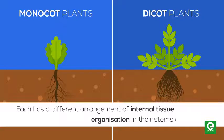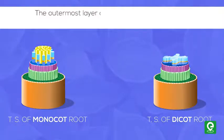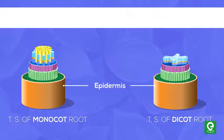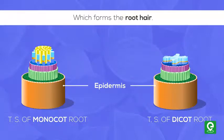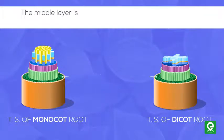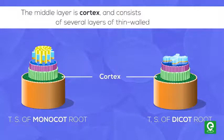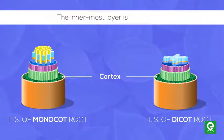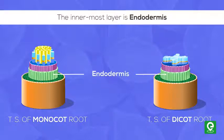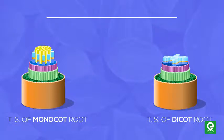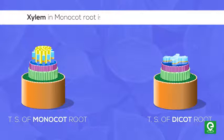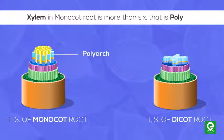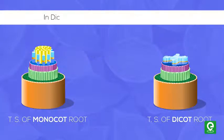The outermost layer of roots in both monocot and dicot plants is the epidermis, which forms the root hair. The middle layer is the cortex, consisting of several layers of thin-walled parenchyma cells. The innermost layer is the endodermis. The vascular tissue xylem in monocot root is more than six, that is polyarch, while in dicot root the xylem bundles are tetrarch.